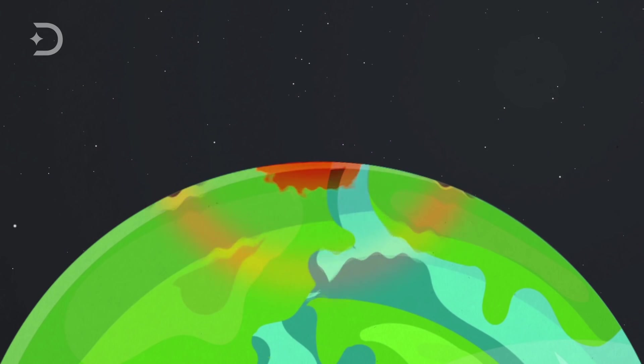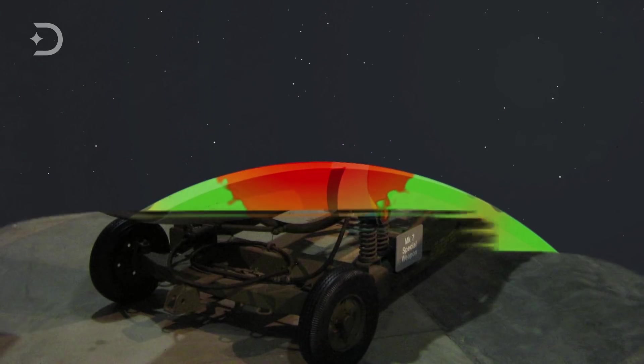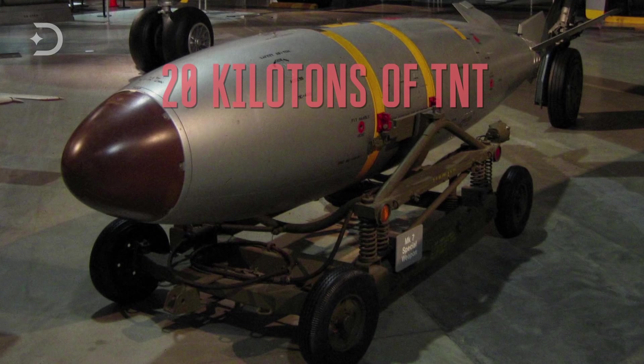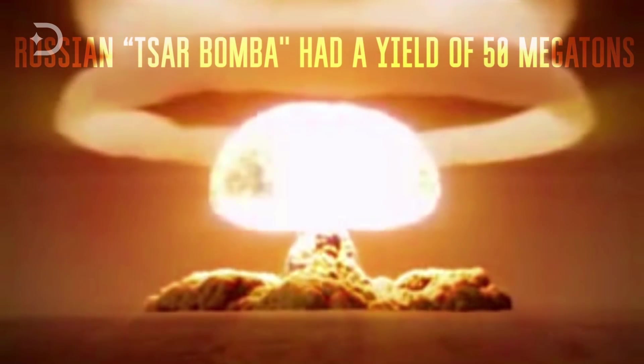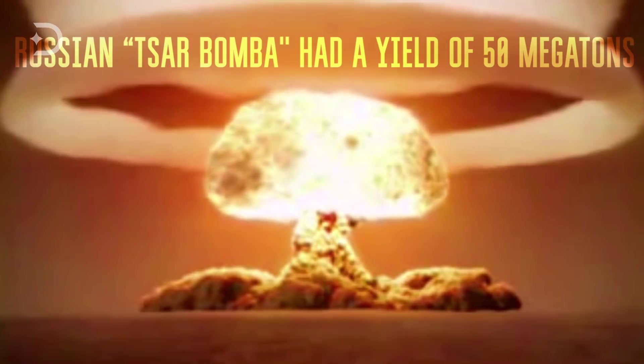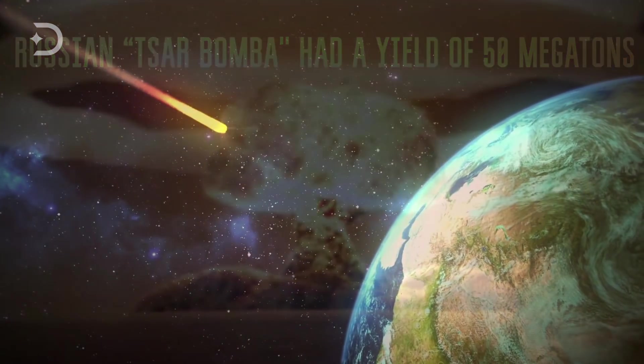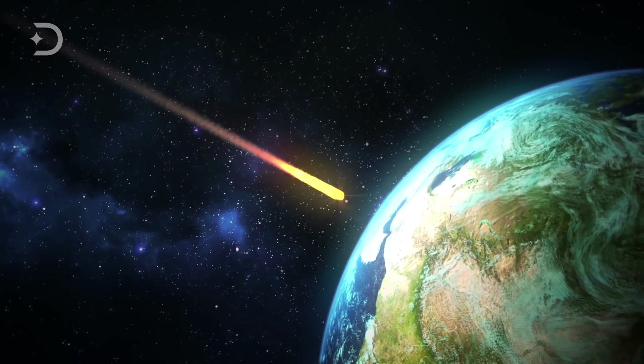To put that in some perspective, the fission bombs used in World War II had an energy release of roughly 20 kilotons of TNT. And the most powerful nuclear weapon ever detonated, the Russian Tsar Bomba, had a yield of 50 megatons. In fact, if you total up the total energy expended during all the nuclear testing in history, you're looking at 510 megatons of TNT.